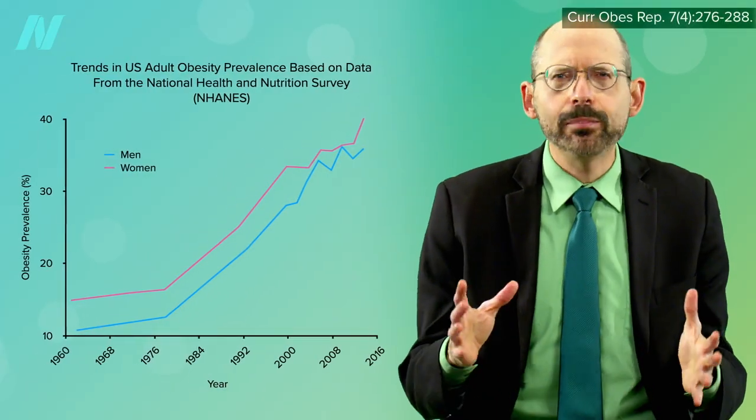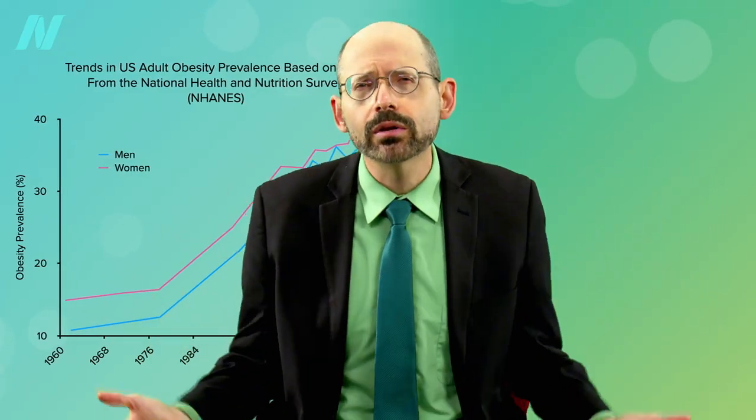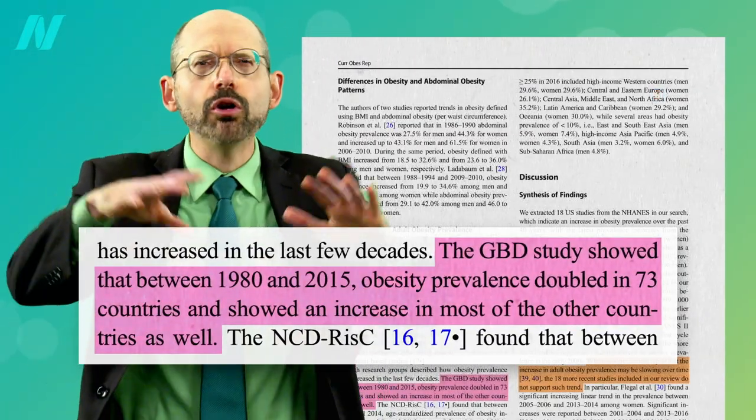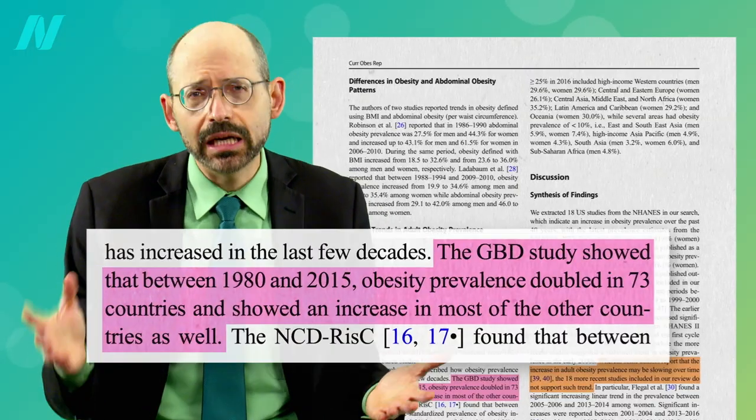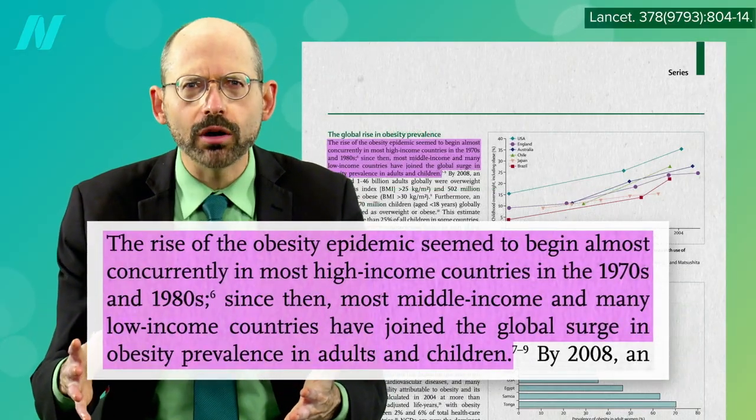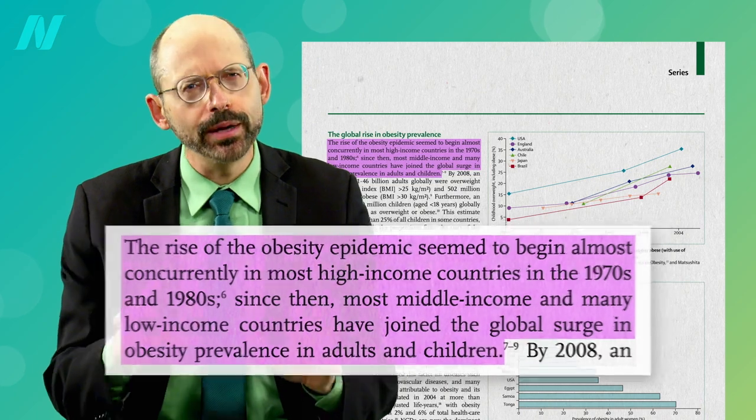Something seems to have happened around the late 1970s, not just here, but around the globe. The obesity pandemic took off at about the same time across the world in most high-income countries in the 1970s and 1980s. The fact that the rapid rise appeared almost concurrently across the industrialized world suggests a common cause. What might the trigger have been?